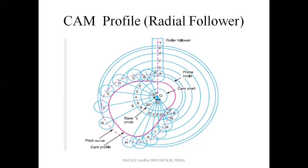From the displacement diagram, take the distance from each point — one to one, two to two — whatever notation you have made. After plotting these distances on the projections taken at points one, two, three, and four, you will get the trace point for that roller. From the trace point, plot the diameter of the rollers, then using a French curve take the lower part of the roller area to plot the cam profile. In this way, for the radial follower, we can prepare the cam profile.